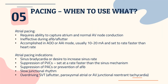For atrial pacing, it requires the ability to capture the atrium and normal AV node conduction. It is ineffective during AFib and AFlutter, and is accomplished in AOO or AAI mode, usually at 10 to 20 milliamps set at a rate faster than the heart rate. Indications include sinus bradycardia, suppression of PVCs, suppression of PACs or prevention of AFib, slow junctional rhythm, or overdrive of SVT such as AFlutter or paroxysmal AV junctional re-entrant tachycardia. Rapid atrial pacing can interrupt a re-entrant circuit and convert it to sinus rhythm or a non-sustained rhythm such as AFib, which may terminate spontaneously.